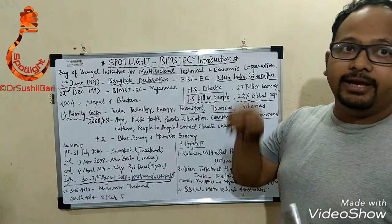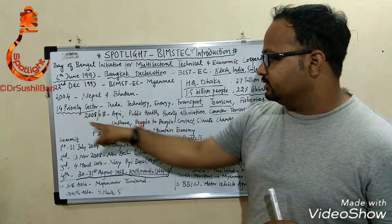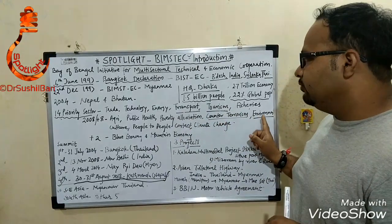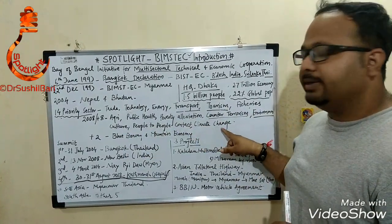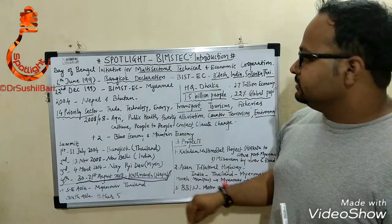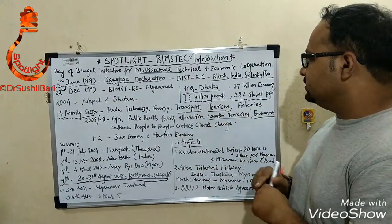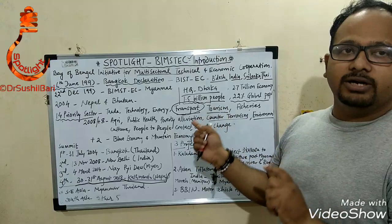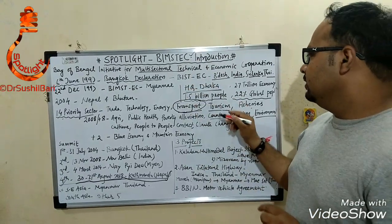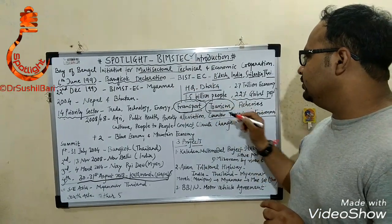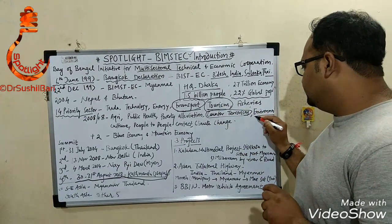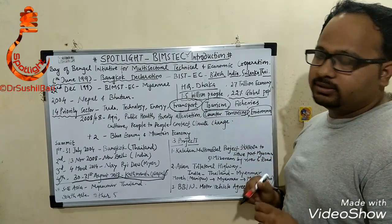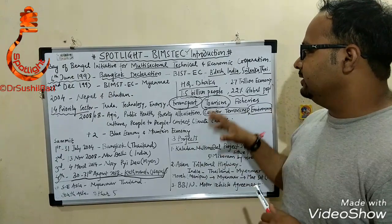In 2018, eight more sectors were added to the previous six, making 14 total priority sectors: agriculture, public health, poverty alleviation, counter-terrorism, environment, culture, people-to-people contact, and climate change. Among these 14 priority sectors, four are directly related to India — transport, tourism, counter-terrorism, and environment — as priority sectors are distributed among member countries.